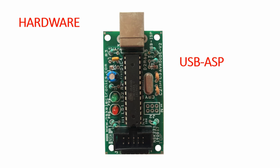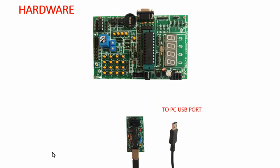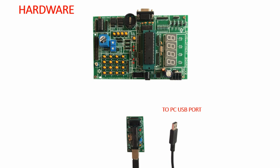The programmer we are going to use is the USB ASP from NSK Electronics. The pinouts of the programmer are as follows. We just need to connect the programmer to our PC through a USB cable, and then connect the JTAG connector from the USB ASP programmer to the development board.